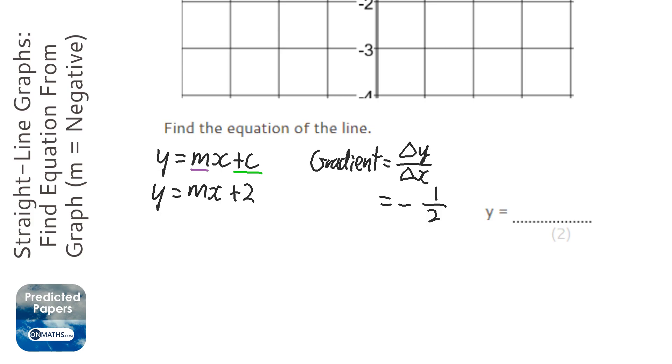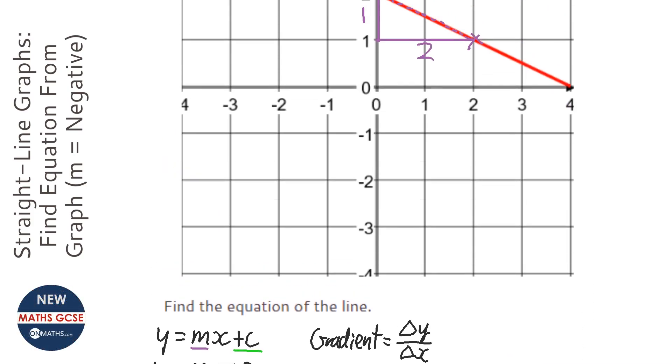You could say that the change in y has to be up to be positive, and if it goes down it goes minus one, and you end up with minus one over two, which is the same as minus a half. So the really important thing is the fact that it's minus half x, and then plus 2. So y equals minus half x, or -0.5x plus 2, is the answer.